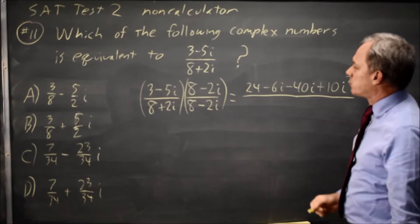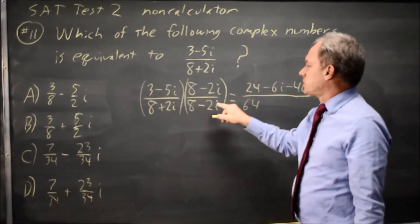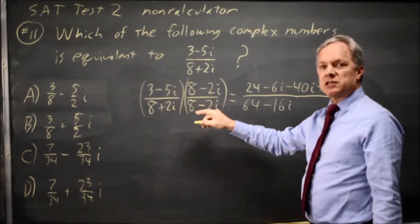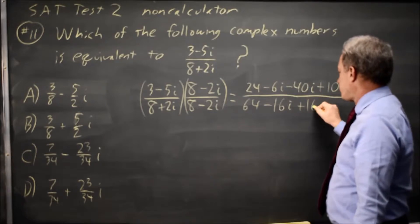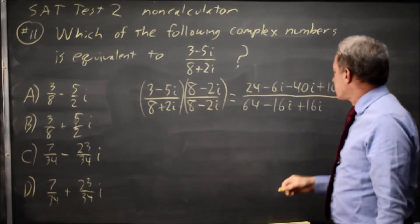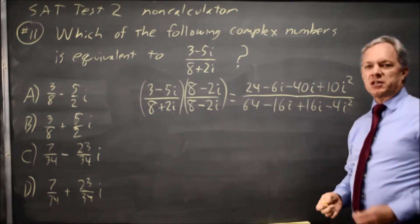Multiplying denominators, 8 times 8 is 64. 8 times negative 2i is negative 16i. 2i times 8 is positive 16i. And the last step of FOIL, 2i times negative 2i is negative 4i squared. Another i squared term. We'll come back to that.